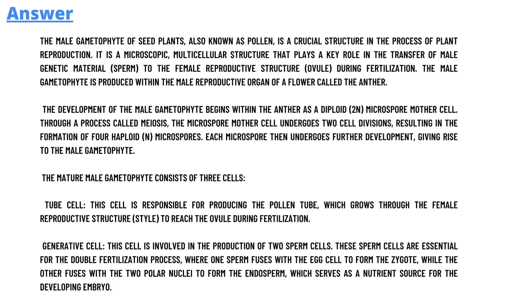The development of the male gametophyte begins within the anther from a diploid microspore mother cell through the process called meiosis. The microspore mother cell undergoes two cell divisions, resulting in the formation of four haploid microspores.